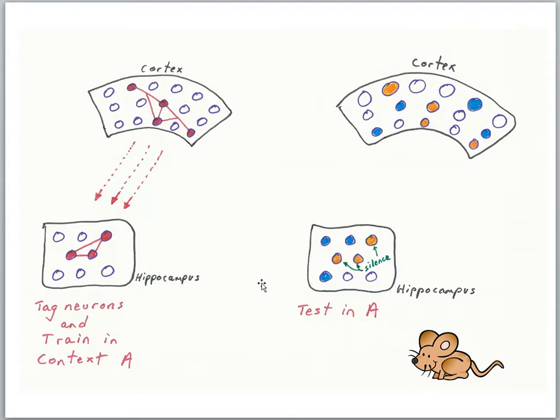In the previous lesson on finding the engram, we looked at some research using optogenetics. And in that lesson, we were looking at the role of the hippocampus and the cortex in storing the memory.